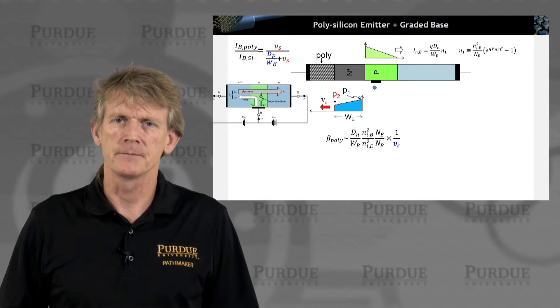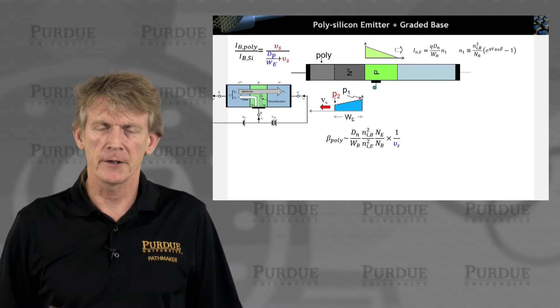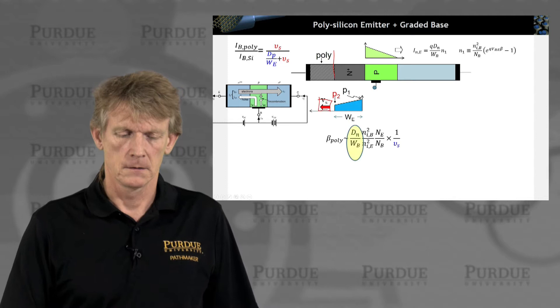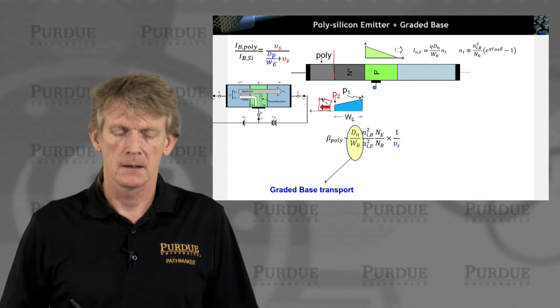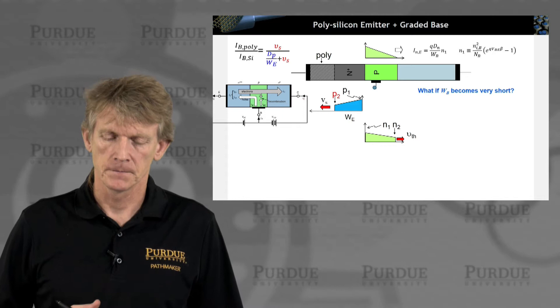Here's what I had just shown where we have a polysilicon emitter. And now we're going to look at effects of a graded junction and a graded base. Just here as a reminder, in the previous section we looked at introducing a polysilicon, which has a finite surface recombination velocity.